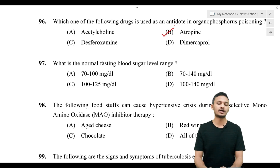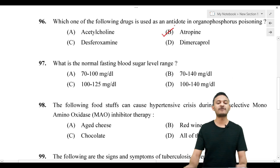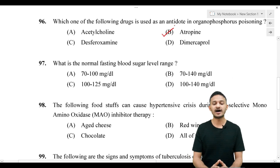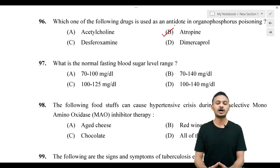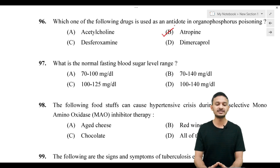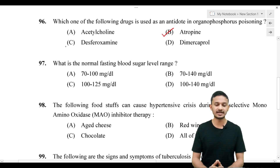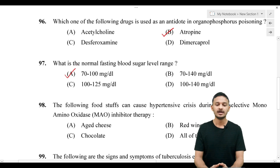Question 97: what is the normal fasting blood sugar level? Option A 70 to 100 mg/dL, option B 70 to 140, option C 100 to 125, option D 100 to 140. The correct answer is option A, 70 to 100 mg/dL, which is the normal fasting range.